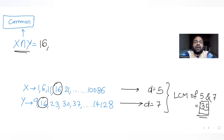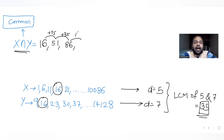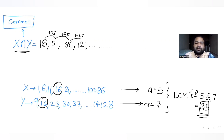After every difference of 35, we get the next common term. So the sequence of common terms goes: 16, 51, 86, 121, and so on. Now we need to find the last term in this intersection list.